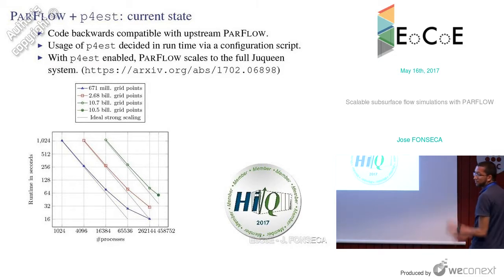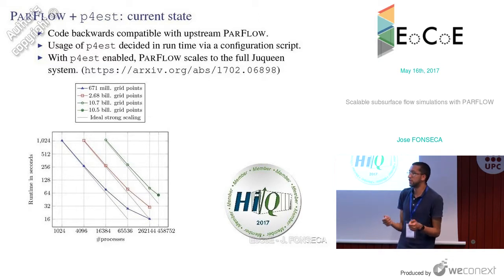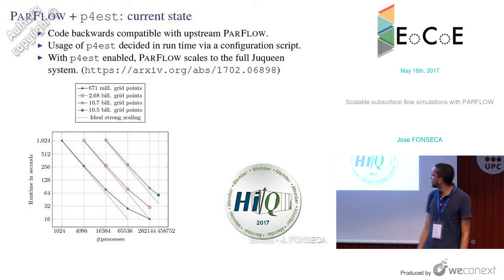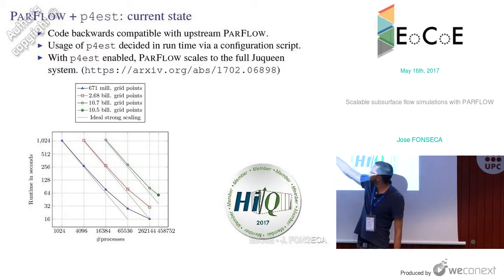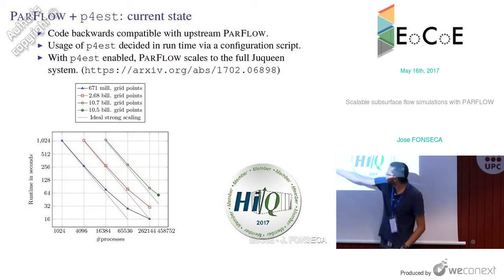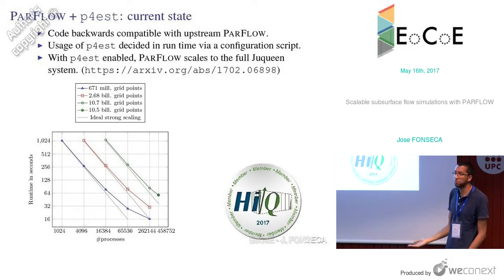The current state of the code: it is backwards compatible with the upstream version of ParFlow. You can compile ParFlow with P4est, and enabling it is a matter of a configuration flag decided at runtime. With P4est enabled, the code scales to the full JUWELS machine for nearly half a million processes. This is shown in a strong scaling study for three different problem sizes; the largest problem has 10 billion grid points with excellent strong scaling. Thanks to these results, the code was included in the HiQ club of the research center Jülich — a list of codes able to scale to the full machine — and there are only 28 codes listed there.